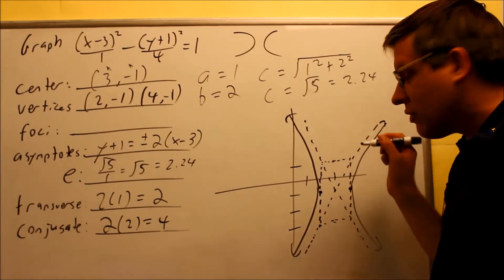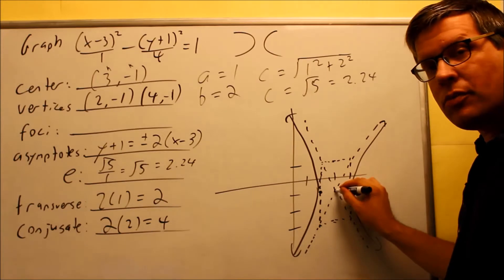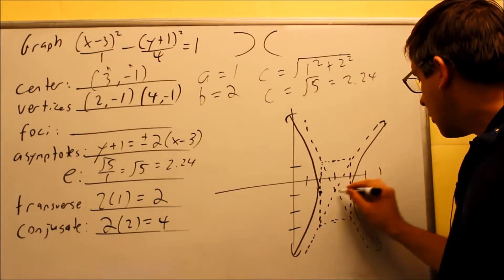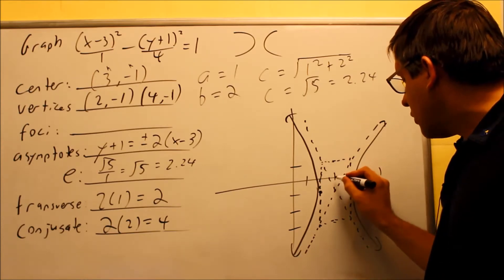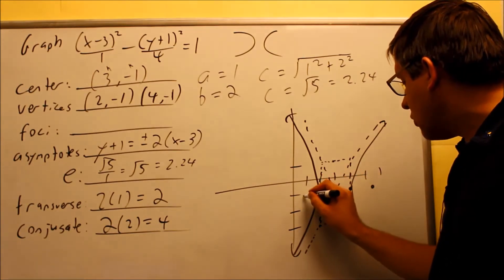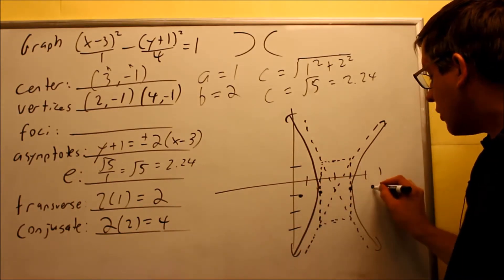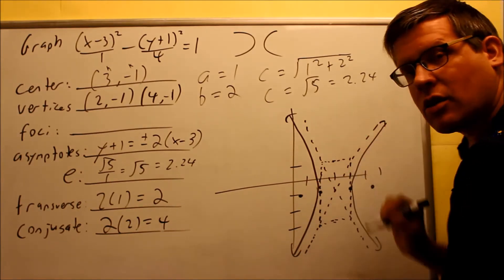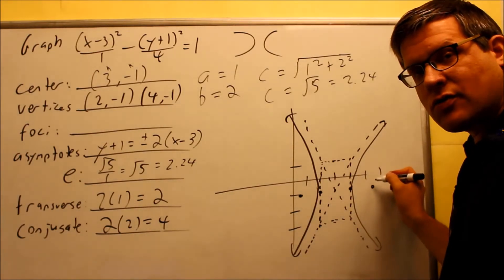All right, the last thing we have to do now is foci. Foci was 2.24. You're going to measure it from this point right here. That's your center. You're going to go 2.24 out here, and then 2.24, that's 1, 2, and 2.4 will be about 2.24s out there. Again, the foci always goes inside of the curve when you're drawing these.